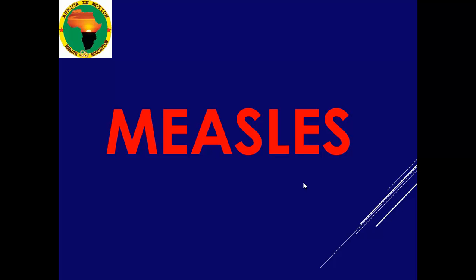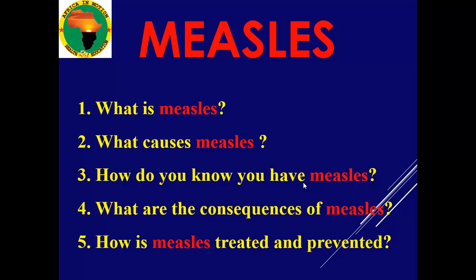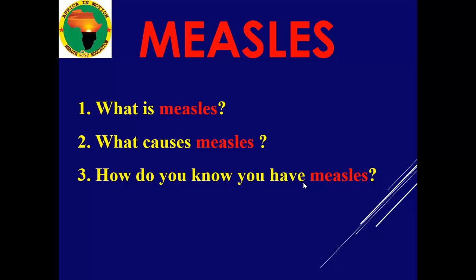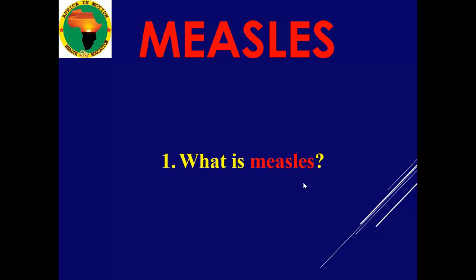We are talking about measles because it is among the top killer diseases. It can be severe, particularly in Africa. We are going to address the five questions as usual: we define the disease measles, check the causes, diagnosis, complications, treatment, and prevention. Let's see part one — what is measles, what causes it, and what are the signs, symptoms, and how to diagnose it.